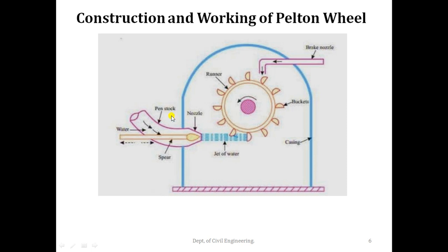Because of the nozzle, all the potential energy is converted into kinetic energy just before the jet hits the buckets of the turbine. The pressure all over the wheel is constant and equal to atmospheric pressure, so the energy transferred to the wheel is due to impulse action. Hence, this turbine is known as an impulse turbine.